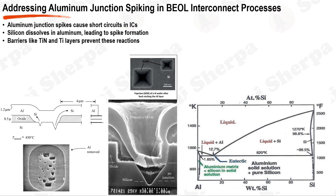Several solutions have been proposed to mitigate aluminum junction spiking. One early solution used silicon-doped aluminum, but this is no longer widespread due to increased resistance, silicon precipitation, and segregation. A more effective solution introduces a diffusion barrier typically composed of titanium nitride, TiN, along with a titanium glue layer. The TiN layer prevents aluminum from diffusing into the silicon substrate, while the titanium layer forms titanium silicide, TiSi2, which promotes good contact and adhesion.